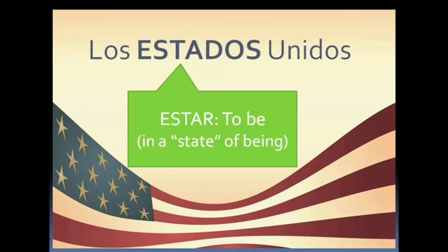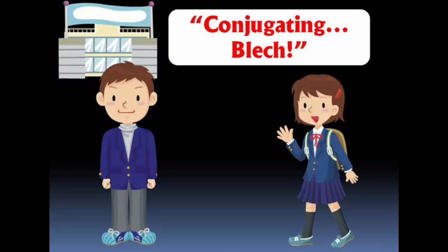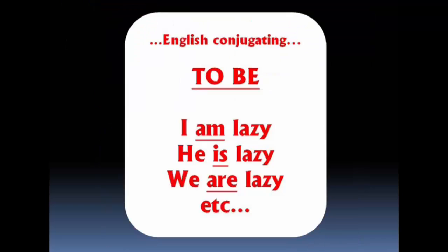Before I get too distracted with my ramblings over moments of enlightenment in my learning of Spanish, I'm going to do a quick review of to be in English. As you know, we do conjugate in English. Some of my students will say no, we don't conjugate in English. I hate Spanish because you have to conjugate. And I tell them, well, we conjugate in English too. For example: I am lazy, you are lazy, he is lazy, she is lazy, we are lazy. Am, are, is — those are all conjugations of the English verb to be.